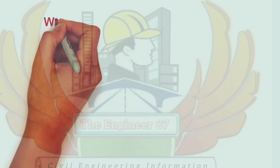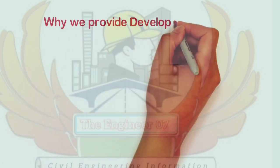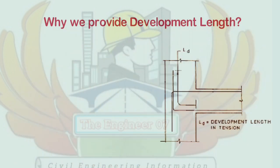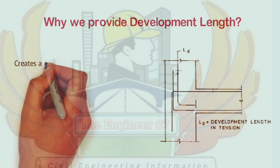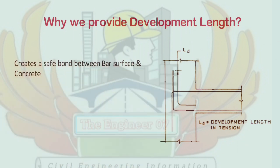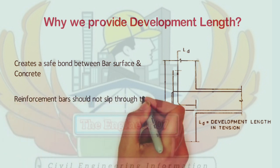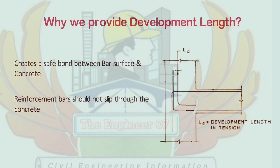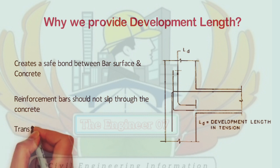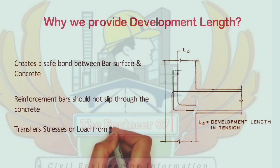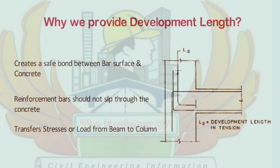Now let us understand why we provide development length. Development length creates a safe bond between bar surface and concrete. It also ensures that during ultimate load conditions, the reinforcement bar should not slip through the concrete. It transfers stresses or load from beam to column smoothly.